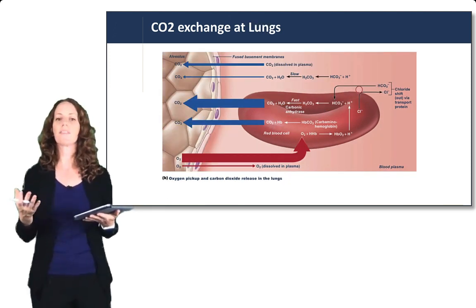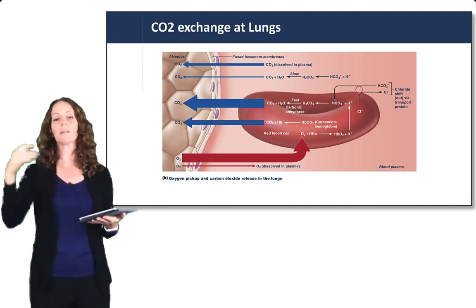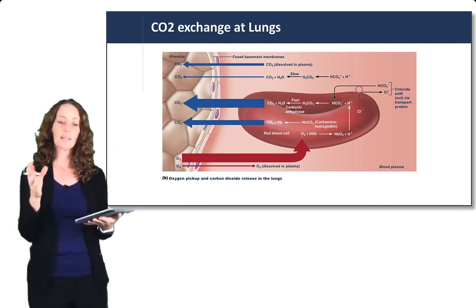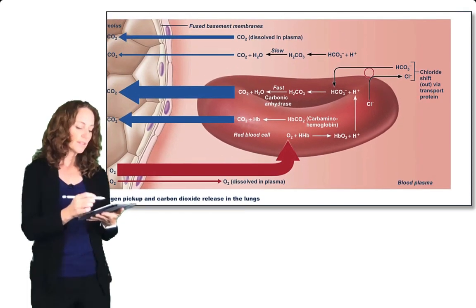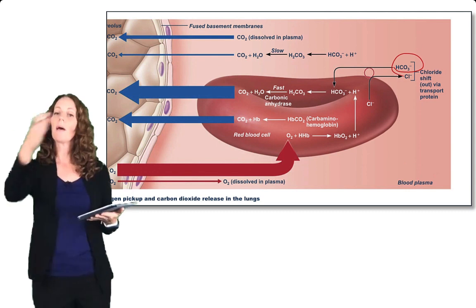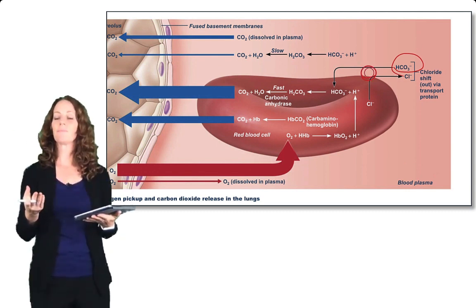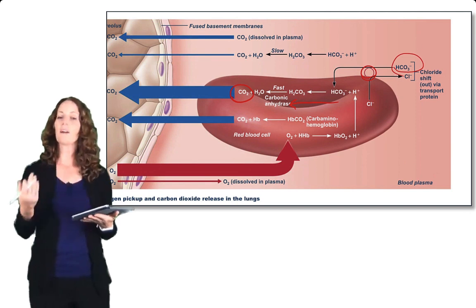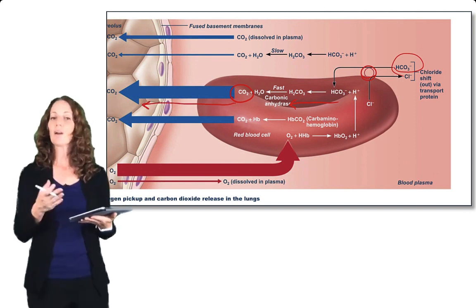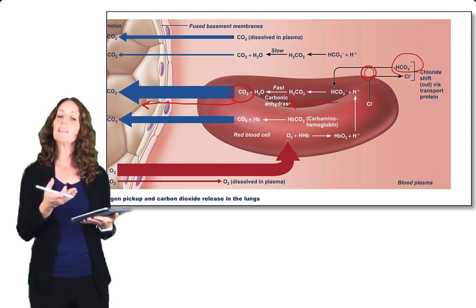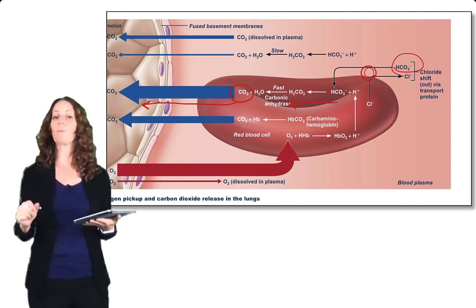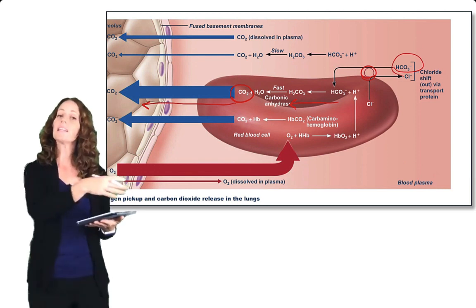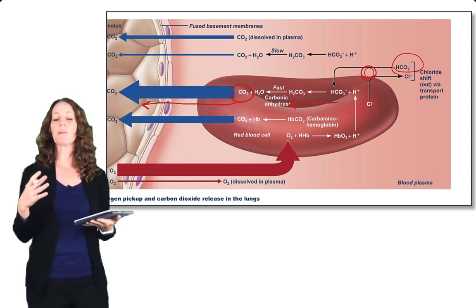Now let's look at CO2 exchange at the lungs, where we need to reverse this reaction. The bicarbonate in the plasma will enter the red blood cells through that same chloride shift. When it enters the red blood cells, the reaction reverses and forms free carbon dioxide. That free carbon dioxide diffuses out of the red blood cells and into the alveoli, where it is released out of the airways. CO2 that was dissolved and CO2 that was bound to hemoglobin can also freely diffuse across into the alveoli and be released as well.